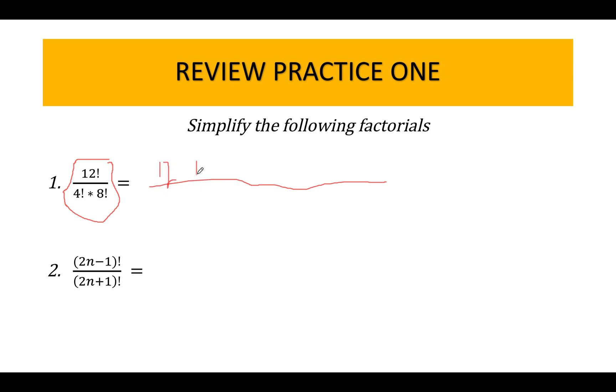But you don't go past 8. Why? Think about that. Why do I stop at 8 factorial? What can I do with the numbers in the denominator that will make my life so easy?